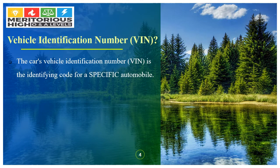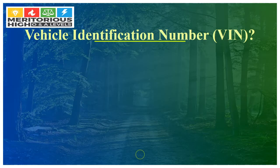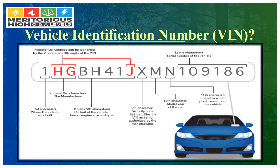Vehicle Identification Number is the identifying code for a specific automobile. A VIN is composed of 17 characters, including digits and capital letters, that act as a unique identifier for a vehicle. Let's look at the VIN number of a car. Is there any specific meaning of these numbers and letters in the VIN? Yes.